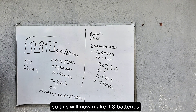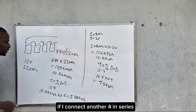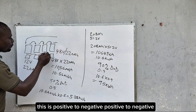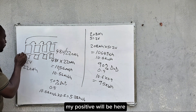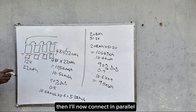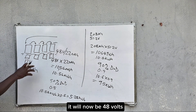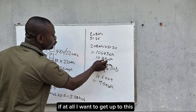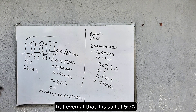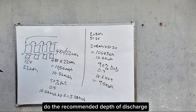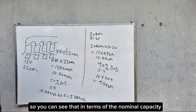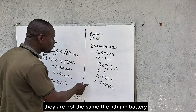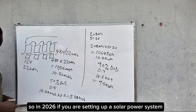If I connect another four batteries in series — positive to negative, positive to negative — and then connect those two strings in parallel, it will be 48 volts at 440 amp hours. Even then, that is still at the 50% recommended DoD for lead acid. So in terms of nominal capacity they are almost the same, but when it comes to usable capacity, the lithium battery will outperform the lead acid battery.